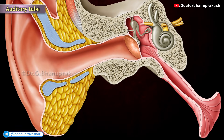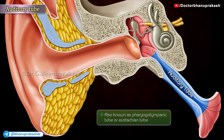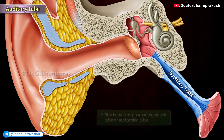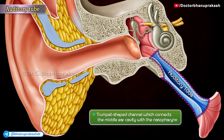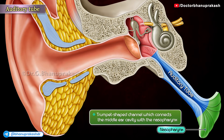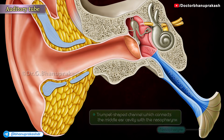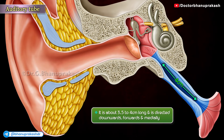The auditory tube is also known as the pharyngotympanic tube or the eustachian tube. It is a trumpet-shaped channel which connects the middle ear cavity with the nasopharynx. It is about 4 cm long and is directed downwards, forwards, and medially.